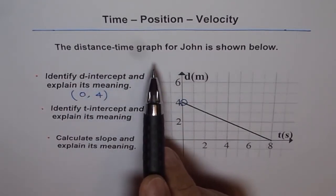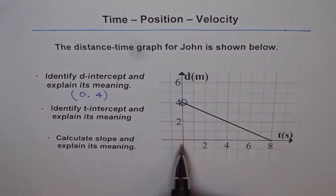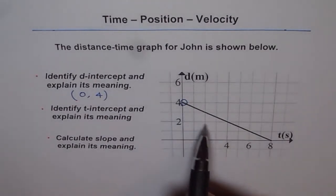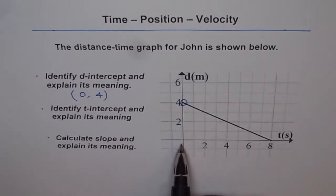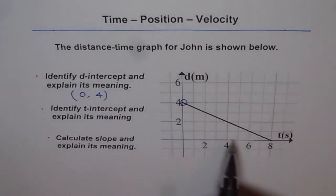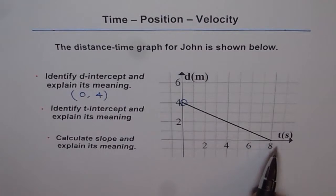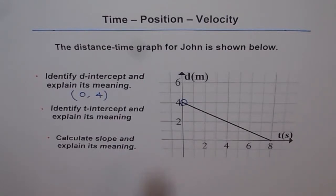The meaning of d-intercept is that it is the distance when time is 0 — it gives you the initial position, the starting point. This distance-time graph is for John, so we can say John is 4 meters away when t equals 0 to start with. John starts 4 meters away and is approaching the source, coming closer and closer with time. So d-intercept here means the initial position — the position of distance when time is 0 in a distance-time graph.